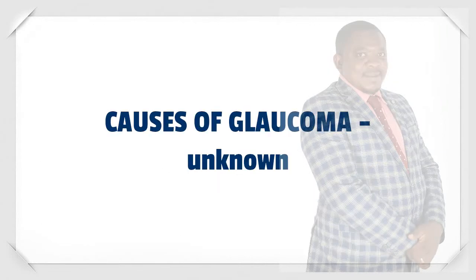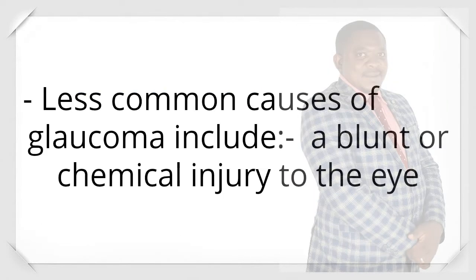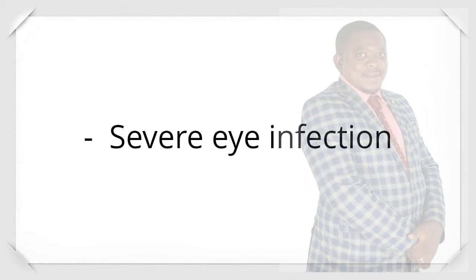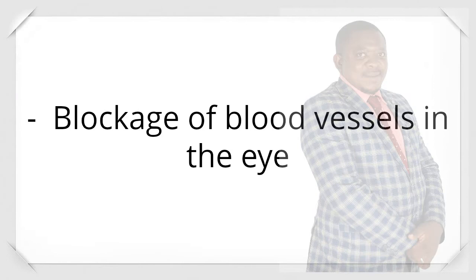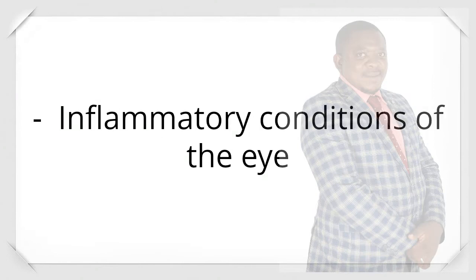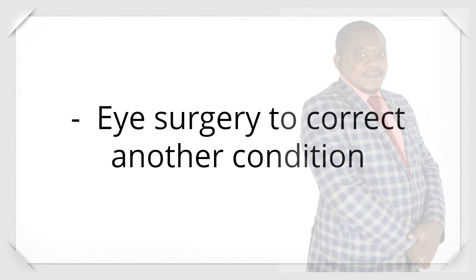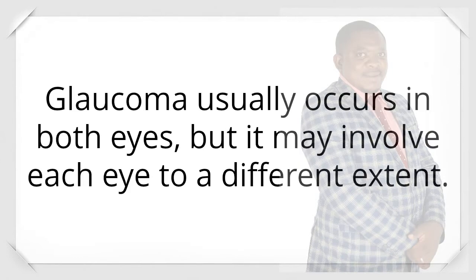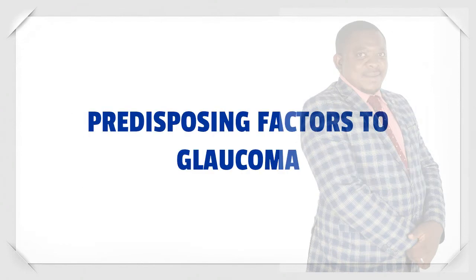Causes of glaucoma: the primary cause is unknown. Less common causes include a blunt or chemical injury to the eye, severe eye infection, blockage of blood vessels in the eye, inflammatory conditions of the eye, and eye surgery to correct another condition. Glaucoma usually occurs in both eyes, but it may involve each eye to a different extent.